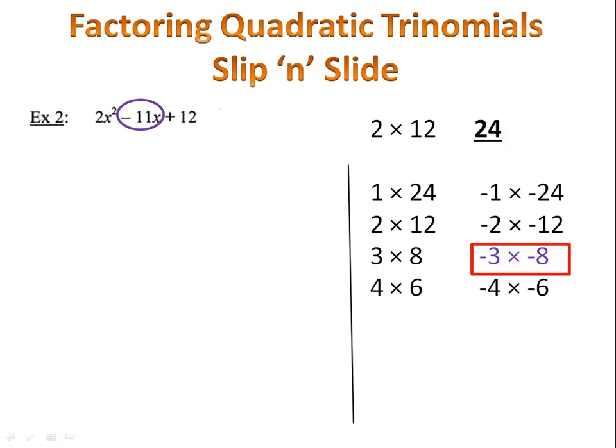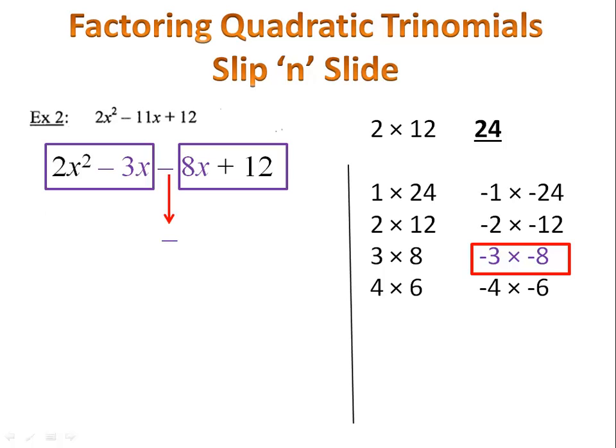So now we're ready to do our work. We'll keep the 2x squared and we'll keep the 12. We're going to slip out that minus 11x and we're going to slide in the minus 3 and the minus 8 each with x's attached. That gives us 2x squared minus 3x minus 8x plus 12. Now we're going to look at two separate pieces here. We'll start on the left and then we'll go on the right. We bring the minus sign, which is in the middle, right on down.